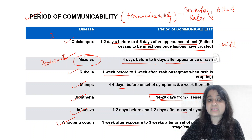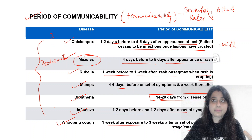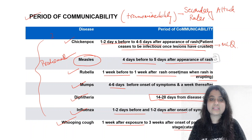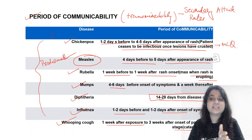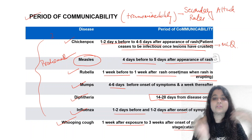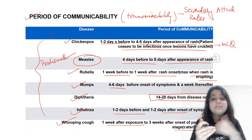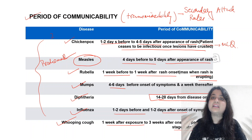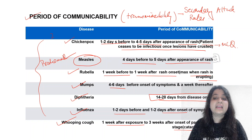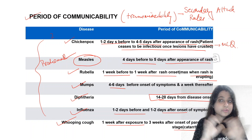What could be expected in exams: chicken pox — one to two days before, four to five days after; measles — four to five days before to five days after; rubella — seven days or one week before to one week after; mumps — four to six days before and seven days after; diphtheria — 14 to 28 days from disease onset; influenza — one to two days before and one to two days after. I hope you understood the period of communicability of these important diseases.